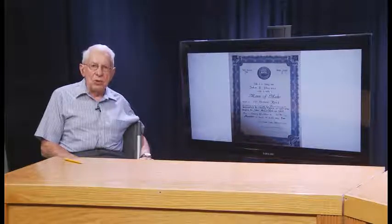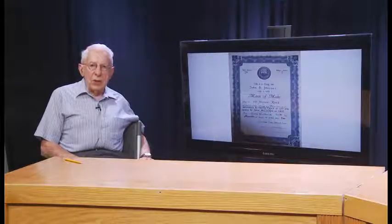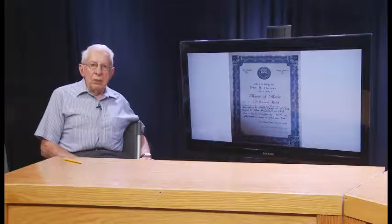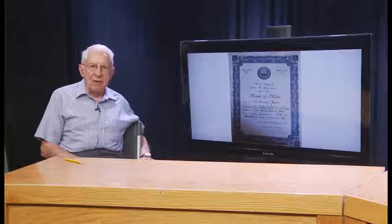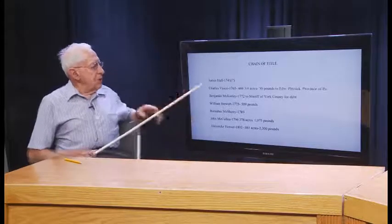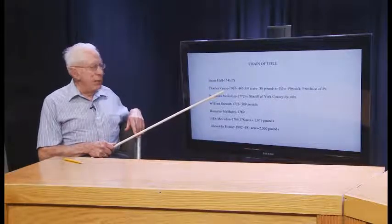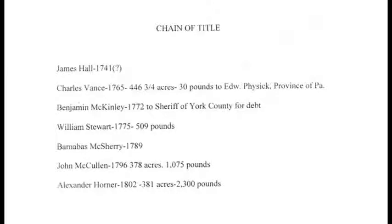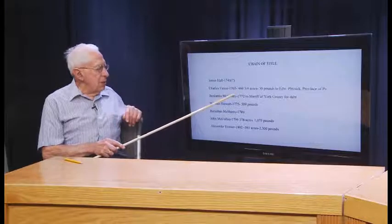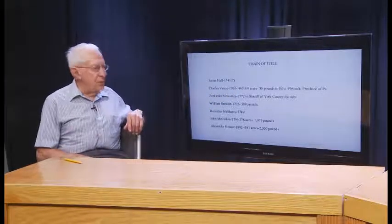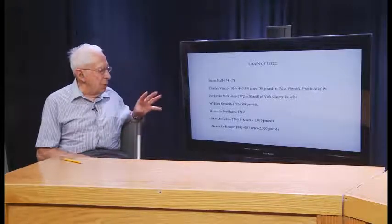The earliest name we can associate with the property that eventually became known as the Horner farm is that of James Hall in 1741. What rights Hall had other than squatters rights is not fully understood, but whatever rights Hall had were assigned to Charles Vance in 1765, the oldest name on any of the deeds in possession of the present owners. The chain of title records that the property changed five times until it was purchased by Alexander Horner in 1802. There was always a question about whether the acreage was 446 acres or 380 acres.